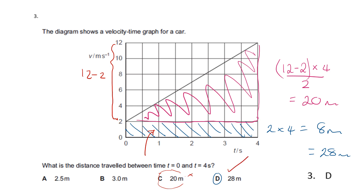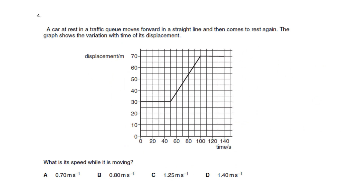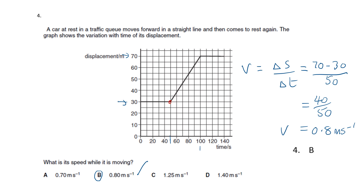Question four: a car at rest in a traffic queue moves forward in a straight line and then comes to rest again. The graph shows the variation with time of its displacement. What is its speed while it is moving? We look at the section of the line where the object is moving — the flat sections mean the object is stationary. Finding the gradient: the displacement is 70 minus 30 = 40 meters, and the time is 100 minus 50 = 50 seconds. So 40 over 50 gives 0.8 meters per second — the answer is B.